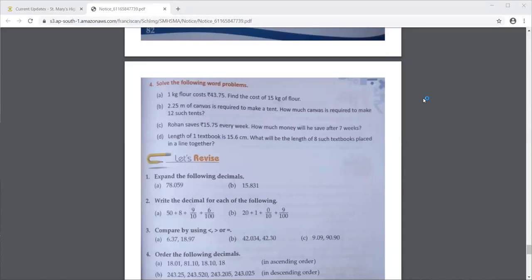So whatever to do actually, you are supposed to add 43.75, like this you have to keep on adding 15 times because you are buying 15 kg of flour. But instead of adding 15 times we can multiply because multiplication is repeated addition. So whenever we want to add the same number many times we don't add but we multiply. So here also 43.75 has to be multiplied by 15.